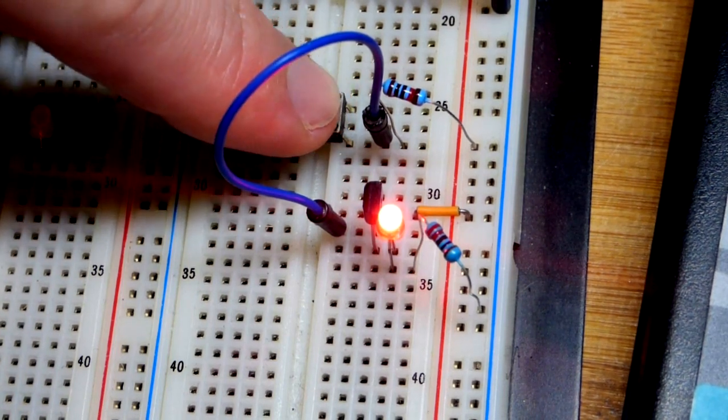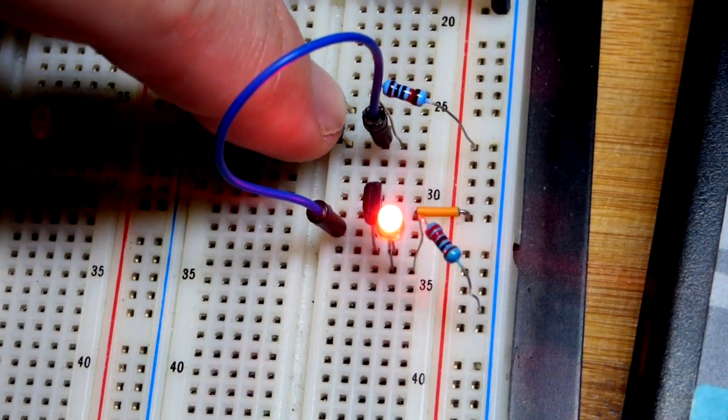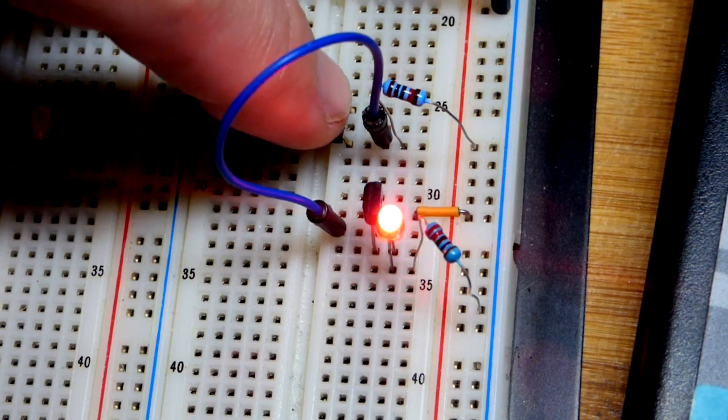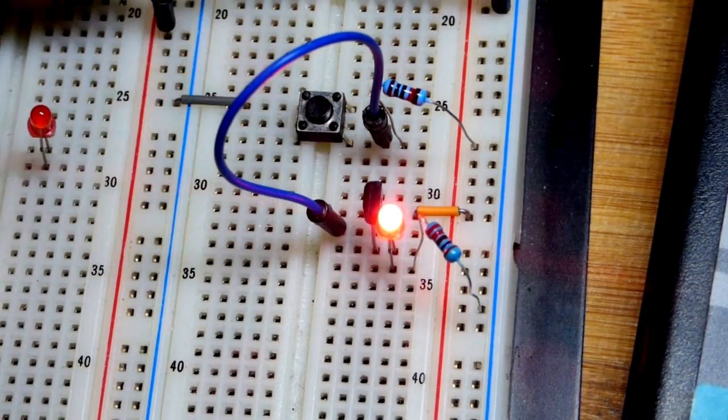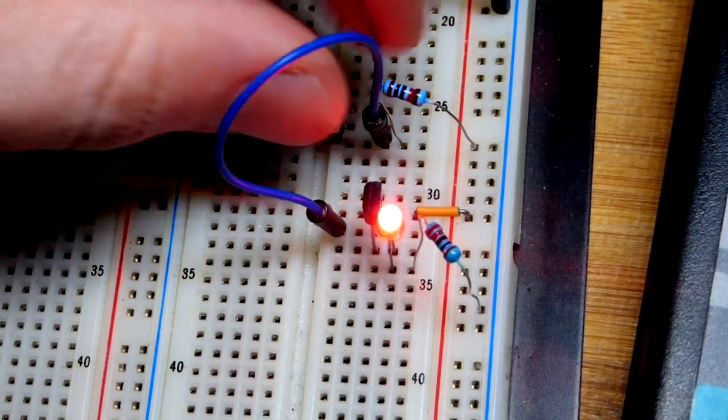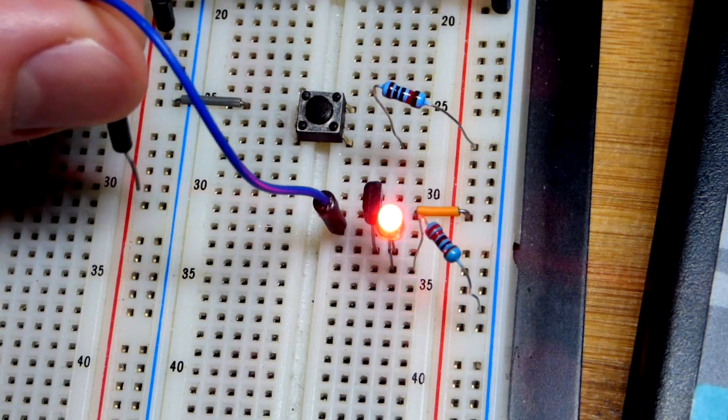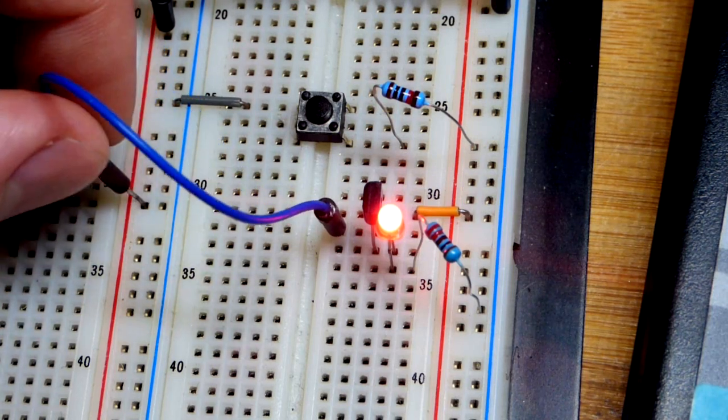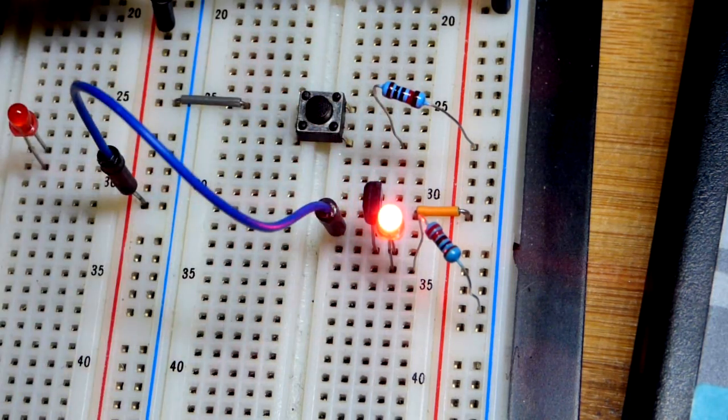If you remember when we had it in the correct direction with the source to the positive rail and the drain headed towards the negative rail, it was off. We're giving a positive signal, it's on. Let's give it a low signal by pressing the button. Interestingly enough you can see the LED get a little bit brighter.